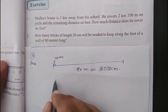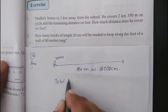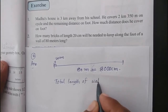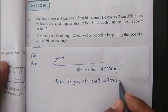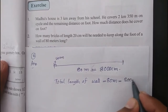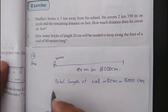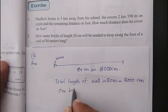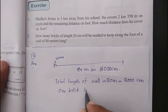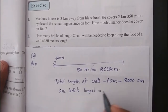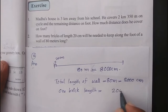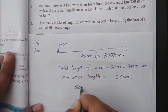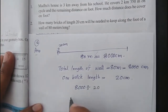Total length of wall is 80 meters, which equals 8000 centimeters. One brick length is 20 centimeters. To get the answer, we should divide 8000 by 20.